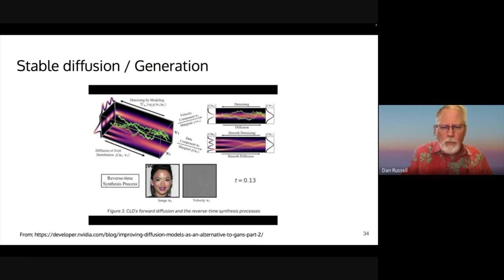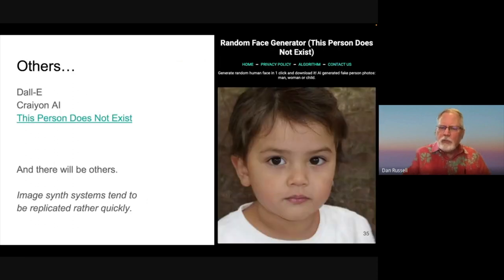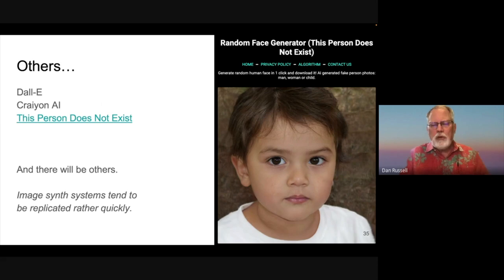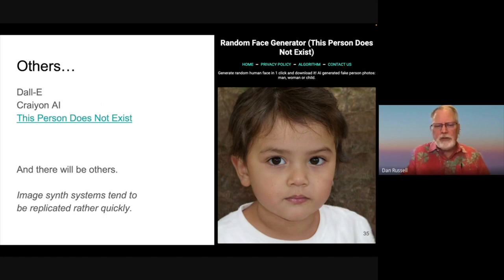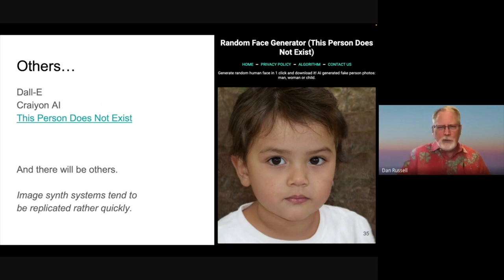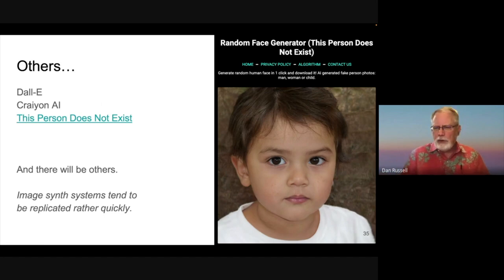These are all synthetic systems, and some of them can do images with incredible resolution and high verisimilitude — they really look real. The website 'This Person Does Not Exist' is a well-known site that generates completely fictitious faces. This child, as attractive as that kid is, is not a real person. You can see where this is going — people push on these boundaries. Synthetic systems like this, because they're available, are replicated very quickly. There are now dozens of these kinds of things. Deep fakes are part of the new tradition that we're having to live with.